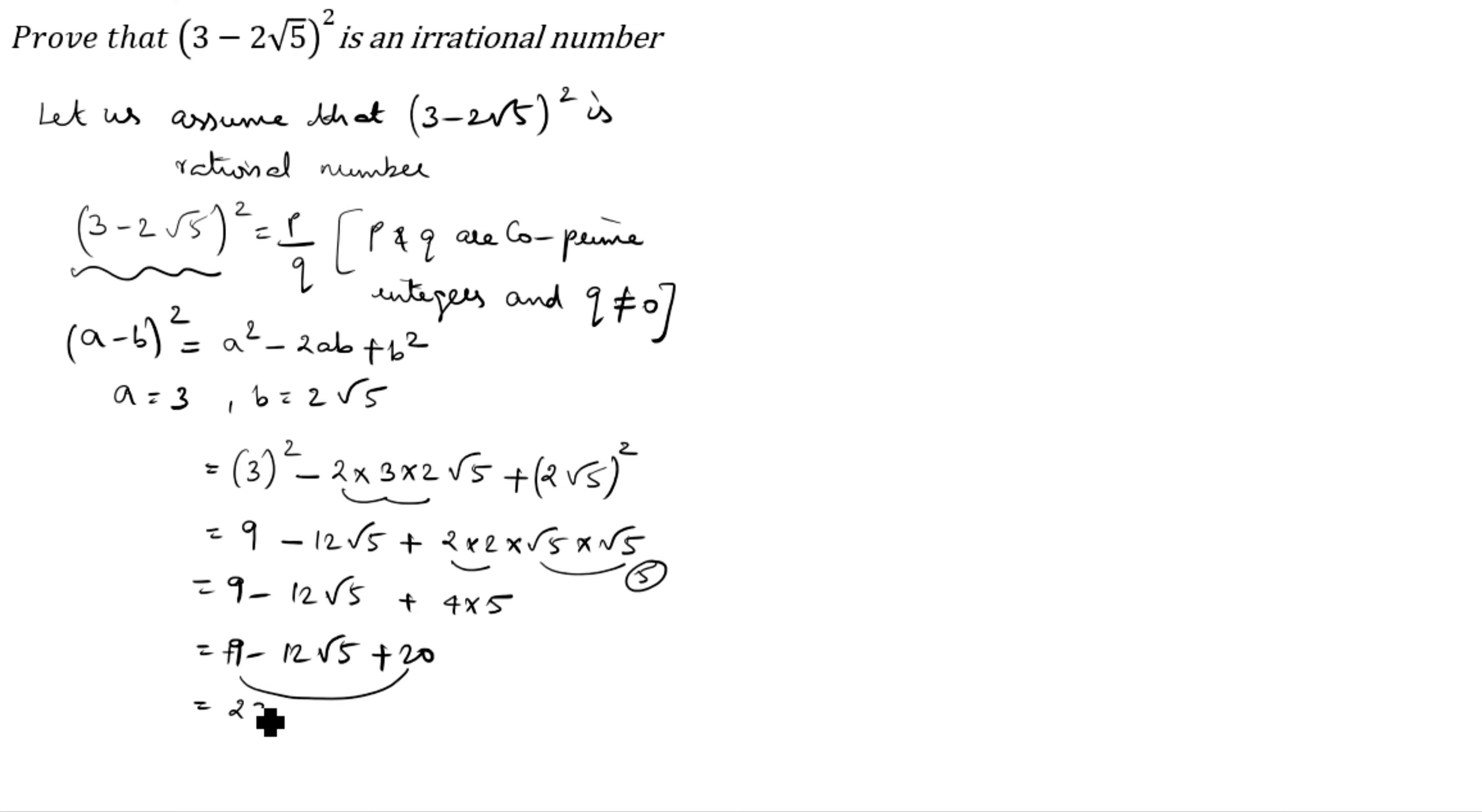After that, this is plus and here also plus. So 20 plus 9 is 29 minus 12 root 5. 29 minus 12 root 5 is equal to P by Q. 29 minus P by Q equal to 12 root 5. Minus goes to this side as plus, plus goes to this side as minus.